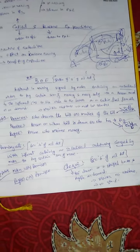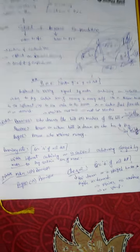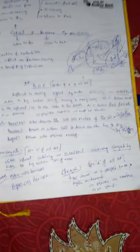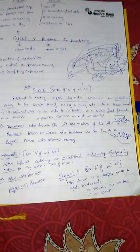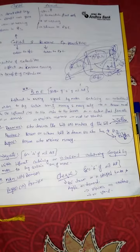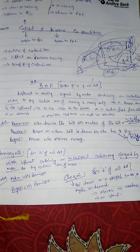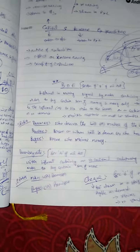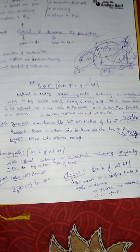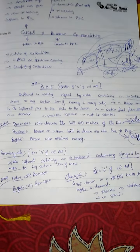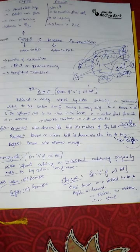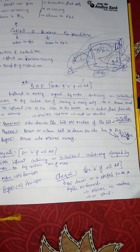Bill of exchange compared to a promissory note: In a bill of exchange, the seller — the one who has to receive the amount — prepares the bill, signs it, and sends it to the person who has to make the payment. Whereas in a promissory note, the person who needs to pay (B in our example) prepares the promissory note — an undertaking that 'I will pay you X amount of money on a specified date' — and signs it. So in a promissory note, the instrument is prepared by the buyer; in a bill of exchange, it is prepared by the seller. A bill of exchange is an unconditional order to make the payment, whereas a promissory note is an unconditional undertaking to pay the amount.